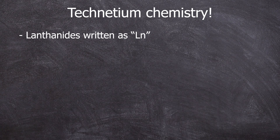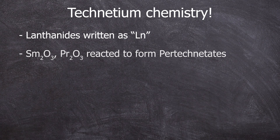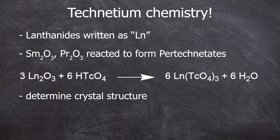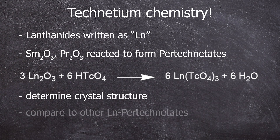What is going to be done in the video? The oxides of lanthanides samarium and praseodymium are reacted with pertechnic acid. In an acid-base reaction, the respective lanthanide pertechnetate and water will form. The crystal structure is then determined to compare it with other lanthanide pertechnetates.